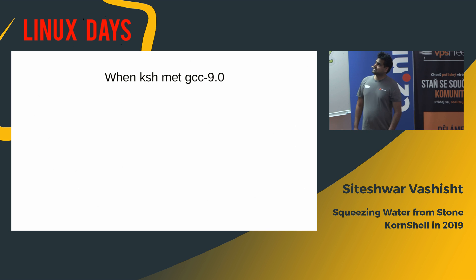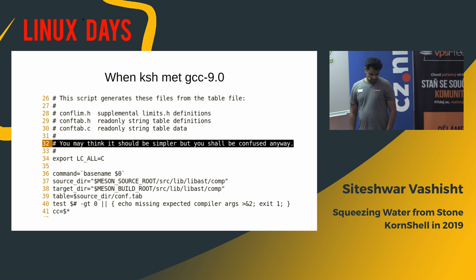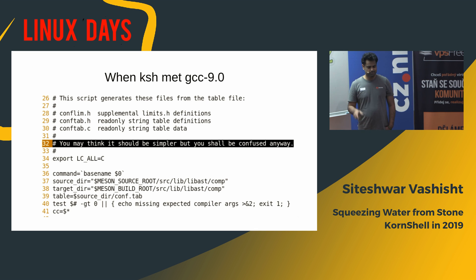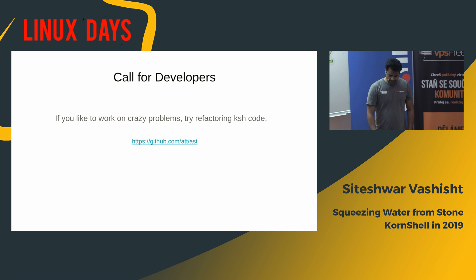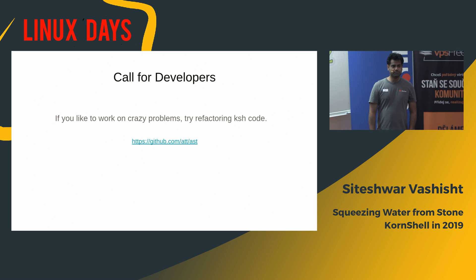In Fedora, GCC was rebased to version 9.0 and it broke the KSH build upstream. The file I was debugging had this comment: 'You may think it should be simpler, but you shall be confused anyway.' It was parsing the output of a GCC command and the format of that output changed, breaking the build. We need more developers — Kornshell is full of crazy problems, and if you like working on crazy problems, try to refactor this code. Our source code is hosted on GitHub and the repository name is AST.